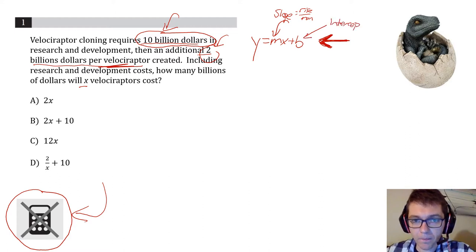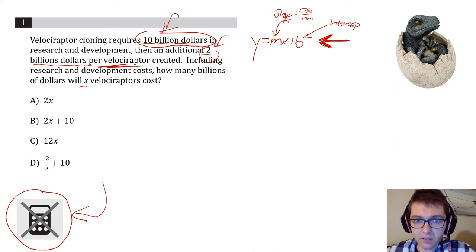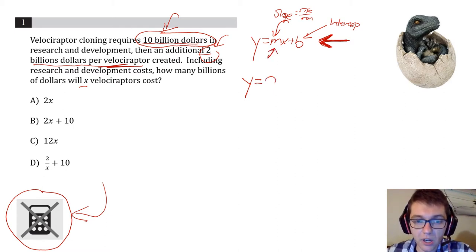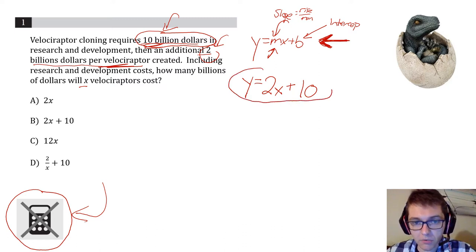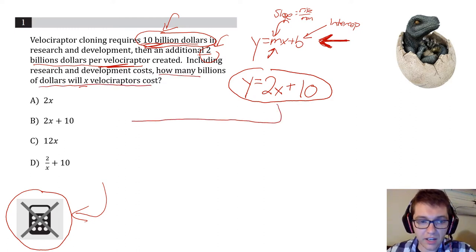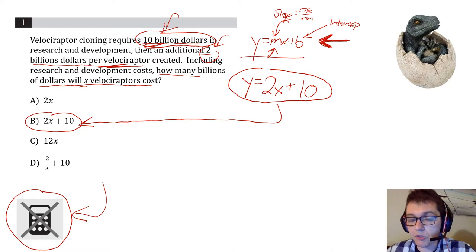In this problem, y is dollars spent, equal to two billion dollars per velociraptor times x (number of velociraptors), plus ten billion for the intercept — the money spent no matter how many you buy. That gives you the slope of the line: how much money you're paying for x velociraptors. The answer is choice B. The y = mx + b equation really is the most important thing to memorize for the SAT, which is why I made it question one.